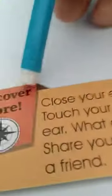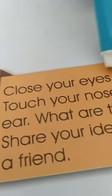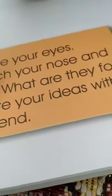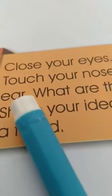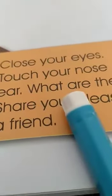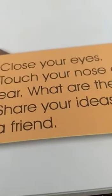Here is a small discovery activity: close your eyes, touch your nose and ear — what are they for? Share your ideas with a friend. Nose is to smell, ear is to hear sounds, eyes are to see, and tongue is to taste. Every part that is given to us has a function.